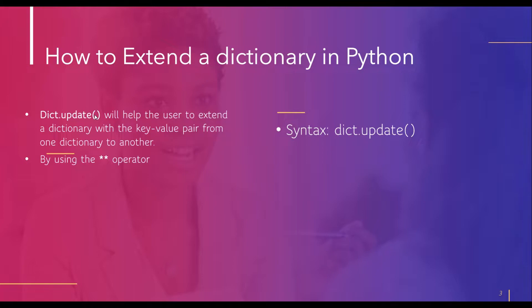In Python, a dictionary has no built-in extend function. In this case we can easily apply the update function, which helps the user to update the dictionary with elements in the form of key-value pairs from another dictionary. So if we have an original dictionary and want to extend it, we use the dictionary.update function. Here is the syntax: dic.update().